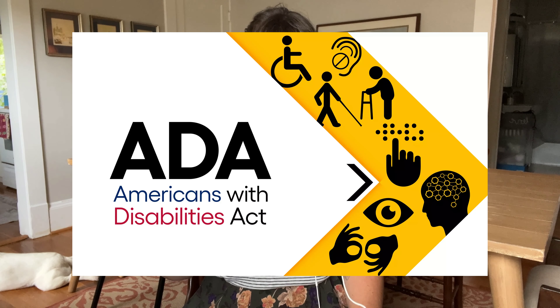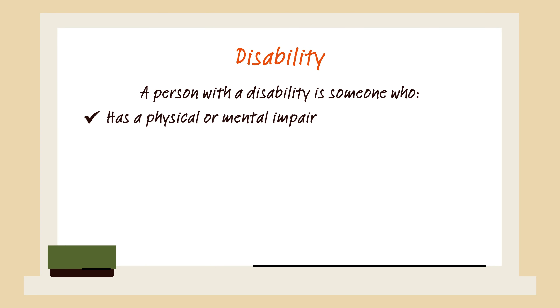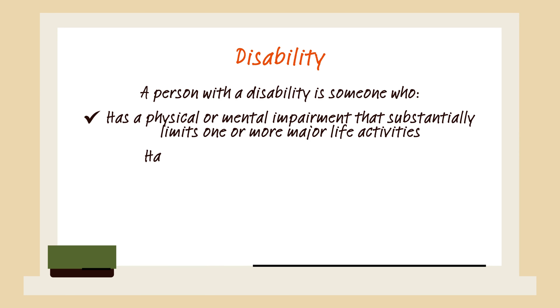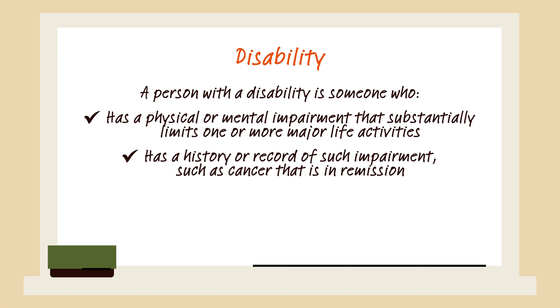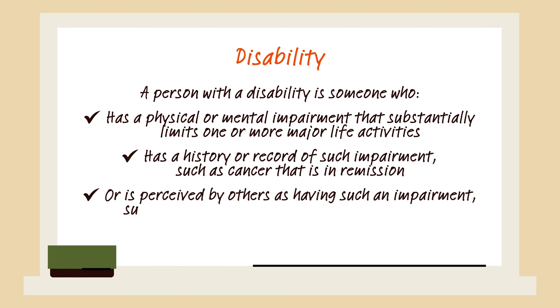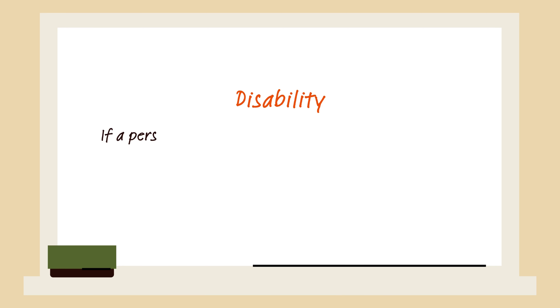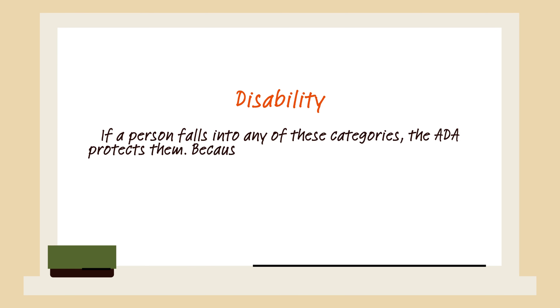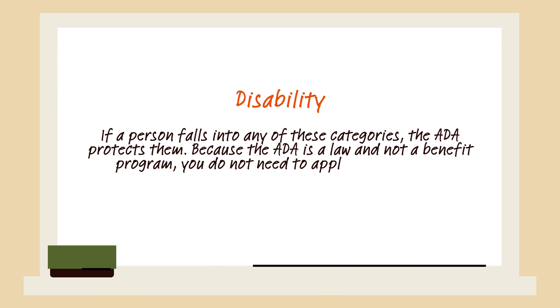That being said, disability is a medical and legal classification — that is how that term is used. It is protected under the Americans with Disabilities Act. People with disabilities are protected under the ADA. The ADA defines disability as: a person with a disability is someone who has a physical or mental impairment that substantially limits one or more major life activities, has a history or record of such impairment — such as cancer that is in remission — or is perceived by others as having such an impairment, such as a person who has scars from a severe burn. If a person falls into any of these categories, the ADA protects them because the ADA is a law, not a benefit program — you do not need to apply for coverage.